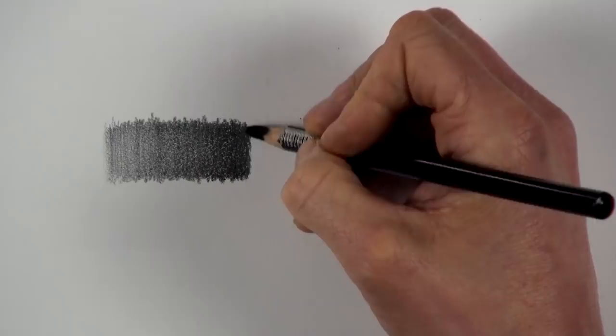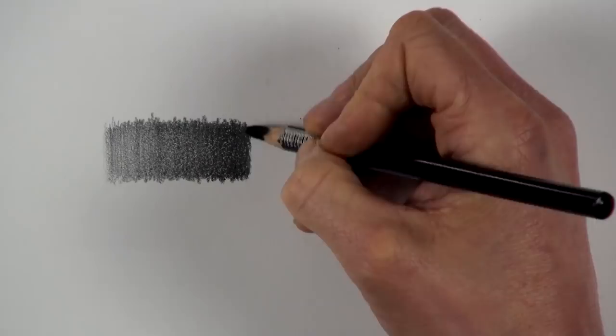And look how there's this very obvious tide mark between where the graphite ends and the carbon starts. And there's not really much that I can do about that. So now let's bring in this pencil by Staedtler.